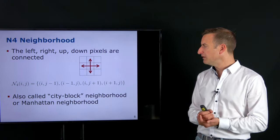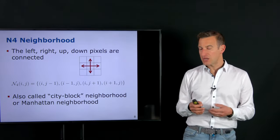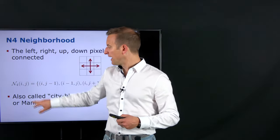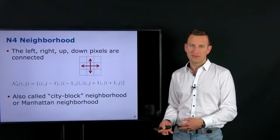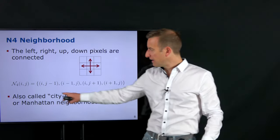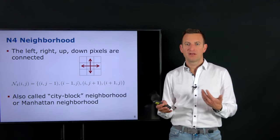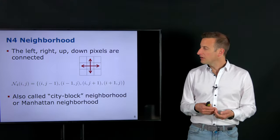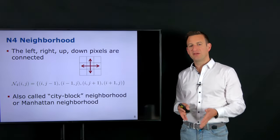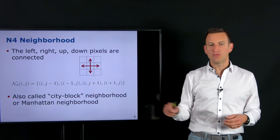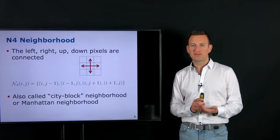We can specify these more formally. For pixel location (i, j), the N4 neighborhood is defined by the set of four pixels obtained by incrementing or decrementing either i or j by one, but not both simultaneously. This gives four connections — right, left, up, down — and is also called the city block or Manhattan neighborhood, since streets in Manhattan form a grid where you can only go north, south, east, or west.